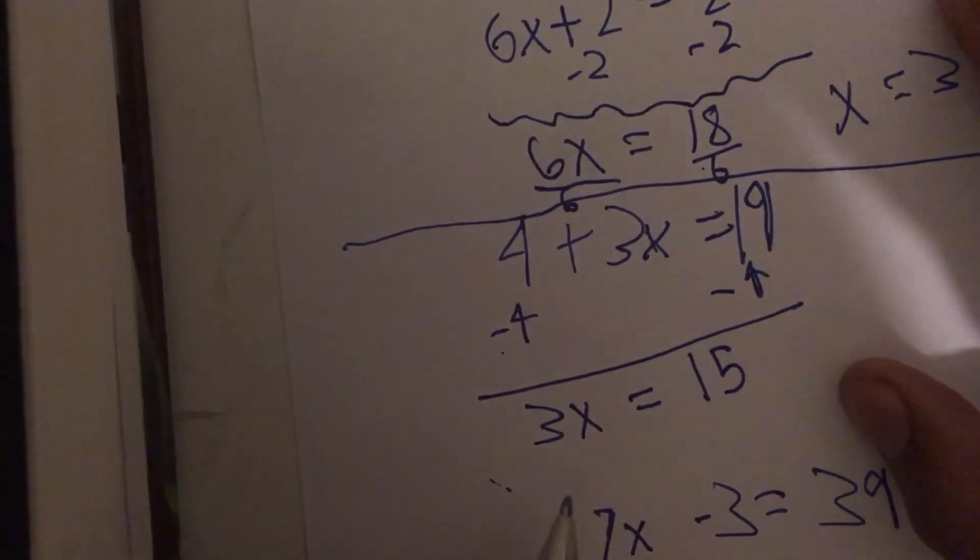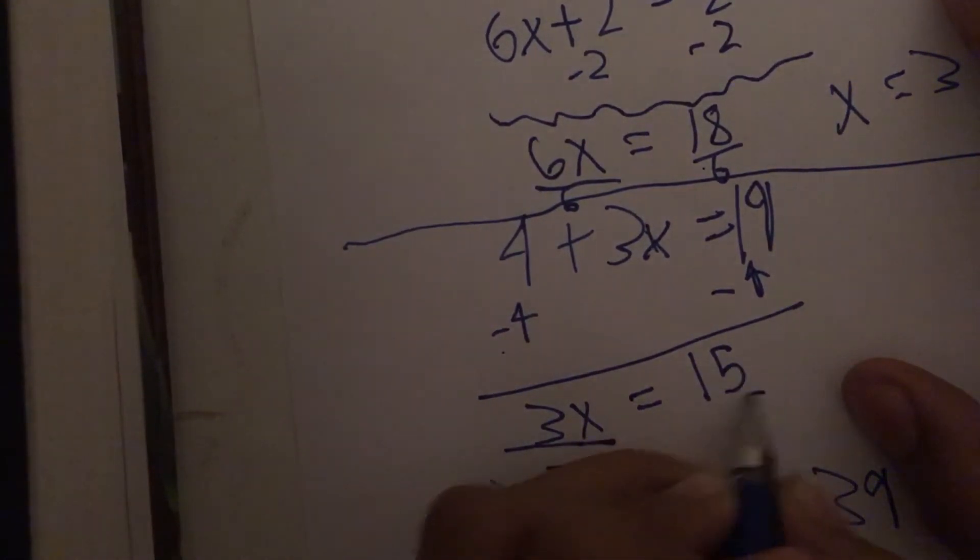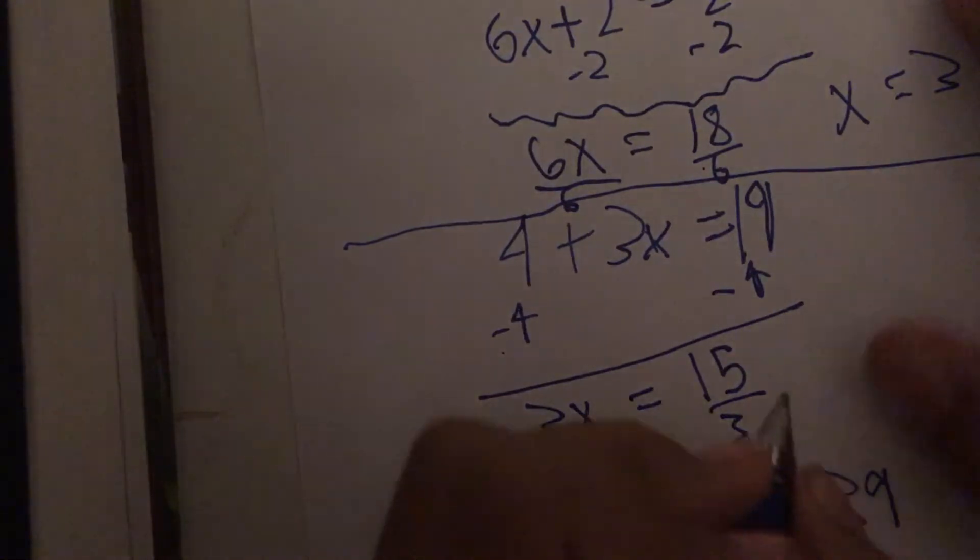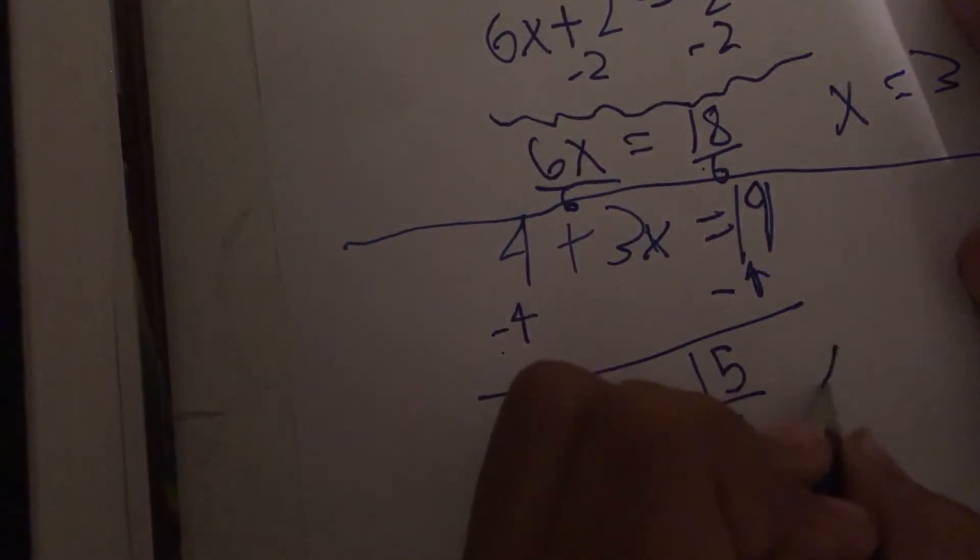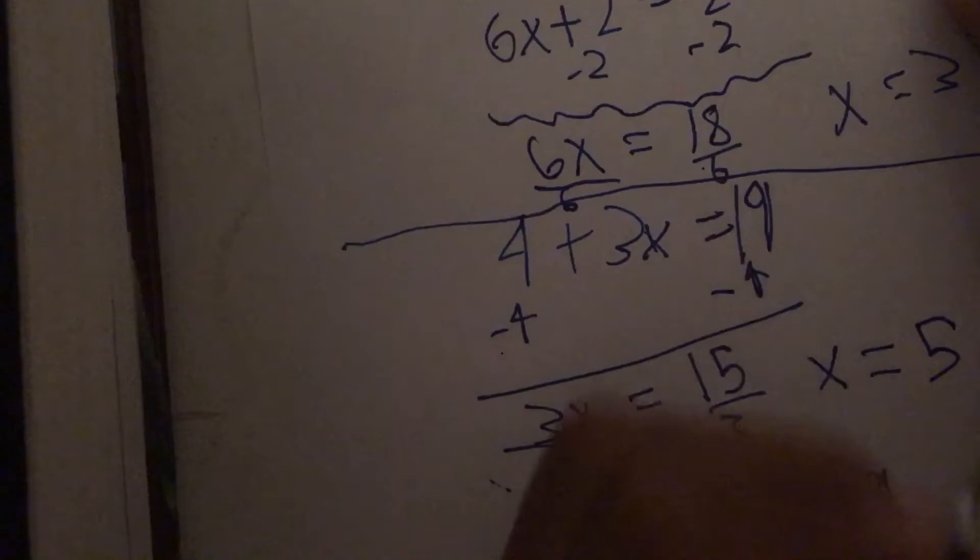I hope you know what we're going to do next. Yep, we are going to divide both sides by 3. So, x equals 5.